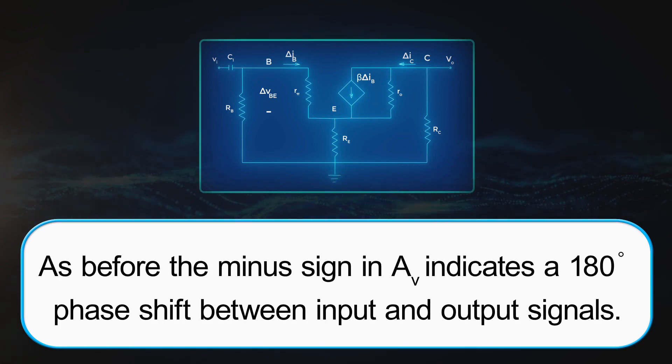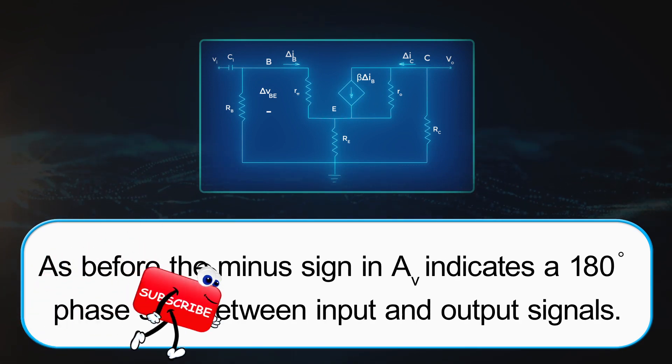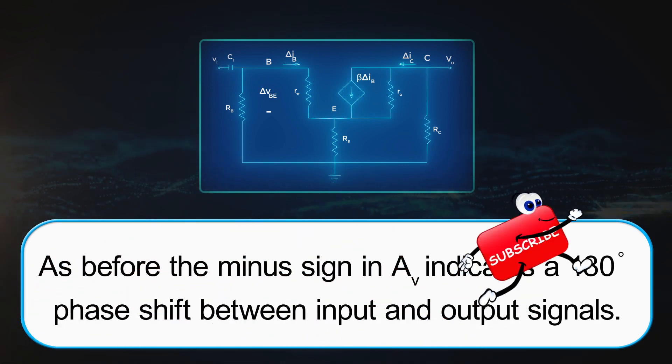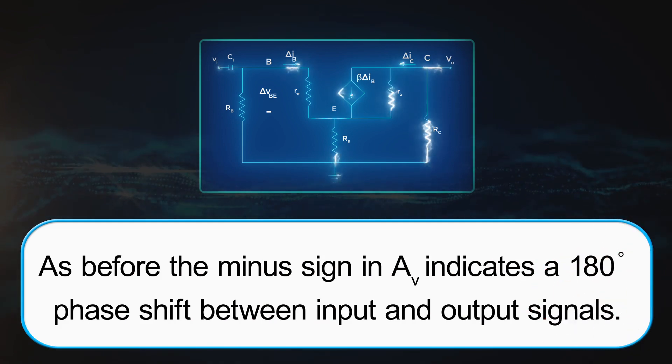As before, the minus sign in AV indicates a 180 degree phase shift between input and output signals.